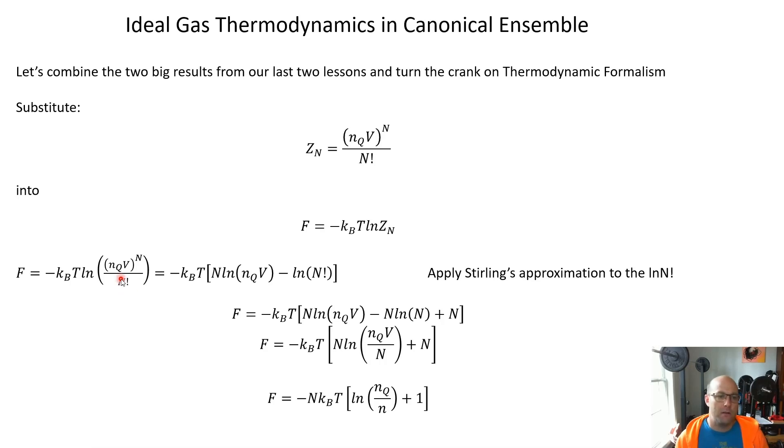You've got this expression and you can start messing around inside the argument of the logarithm. Pull down the power of N, that gives you an N out here, and then separate out the denominator with a minus sign. You see a natural log of N factorial, you know you're going to be doing Stirling's approximation. In this class we call it baby Stirling. Just ln N! is approximately equal to N ln N minus N.